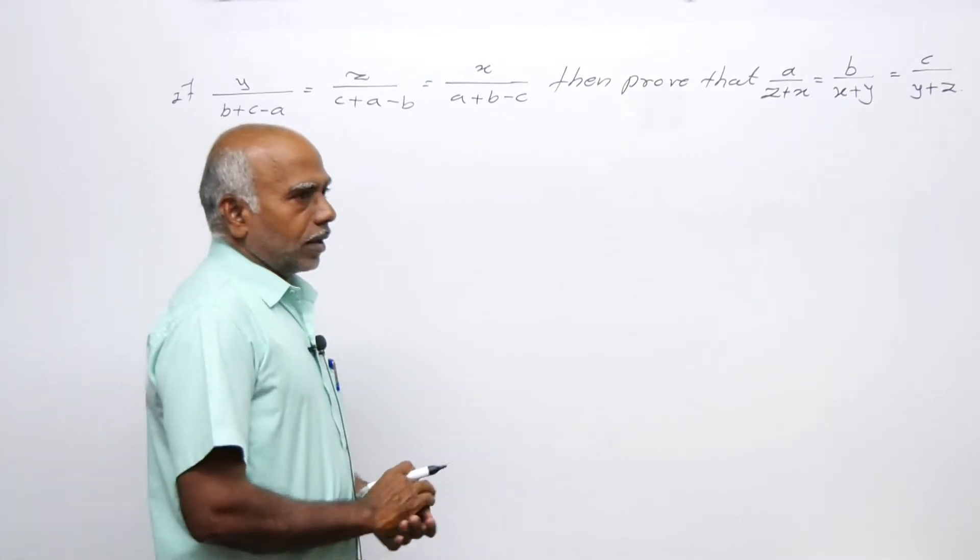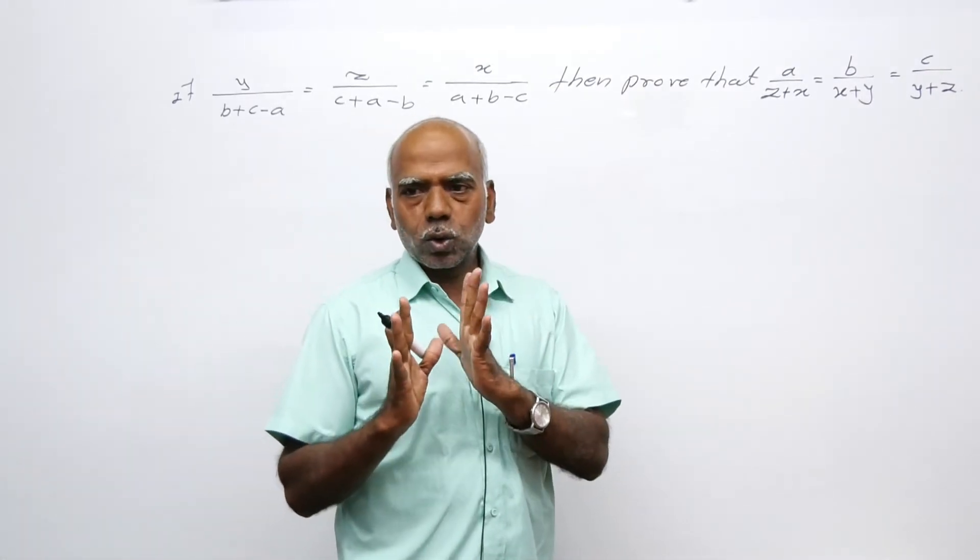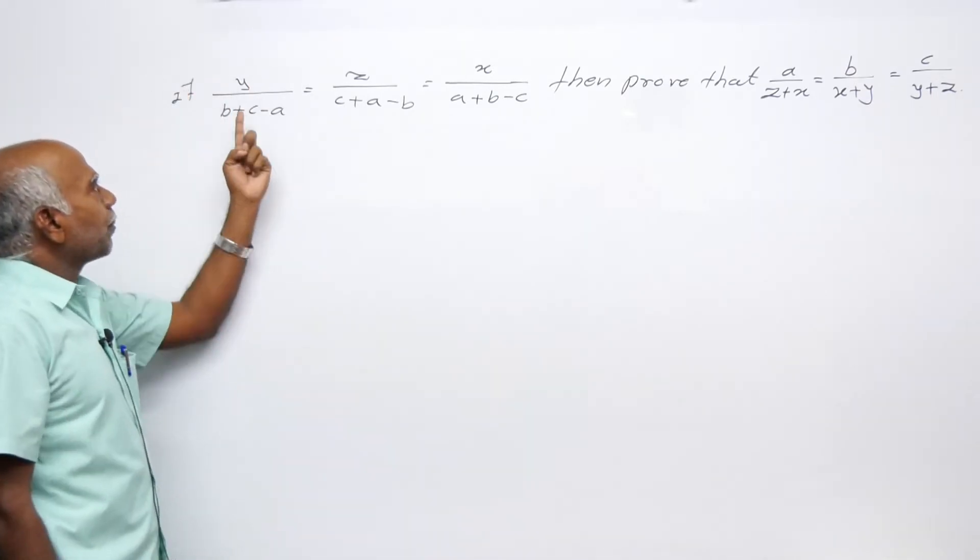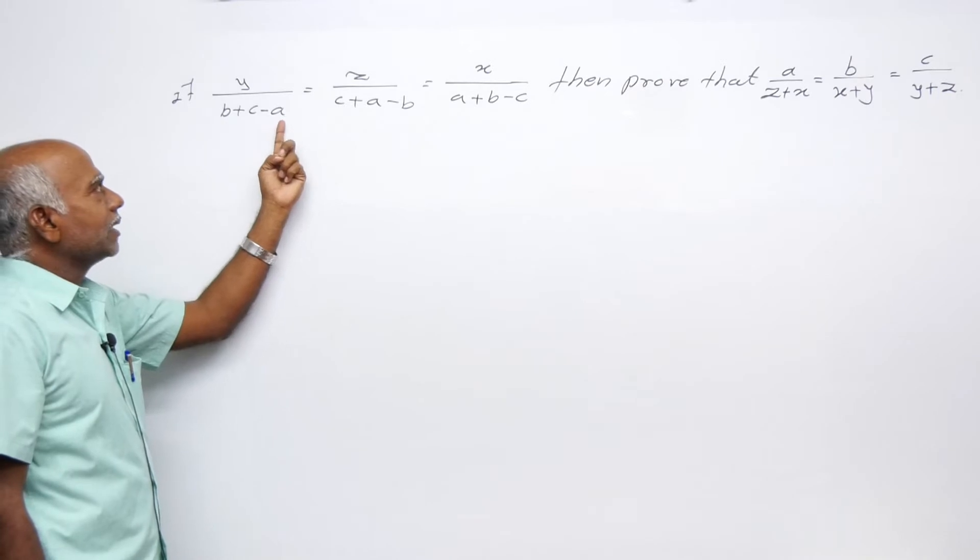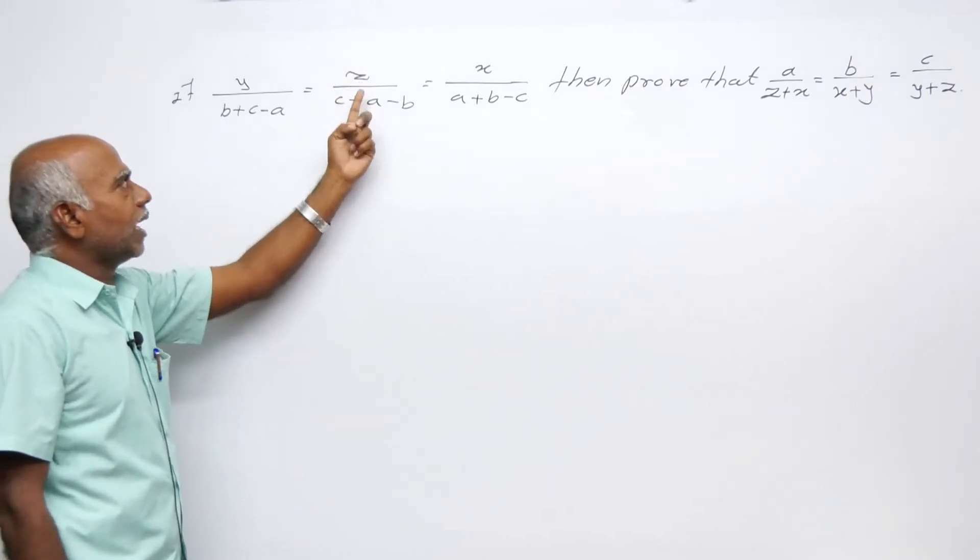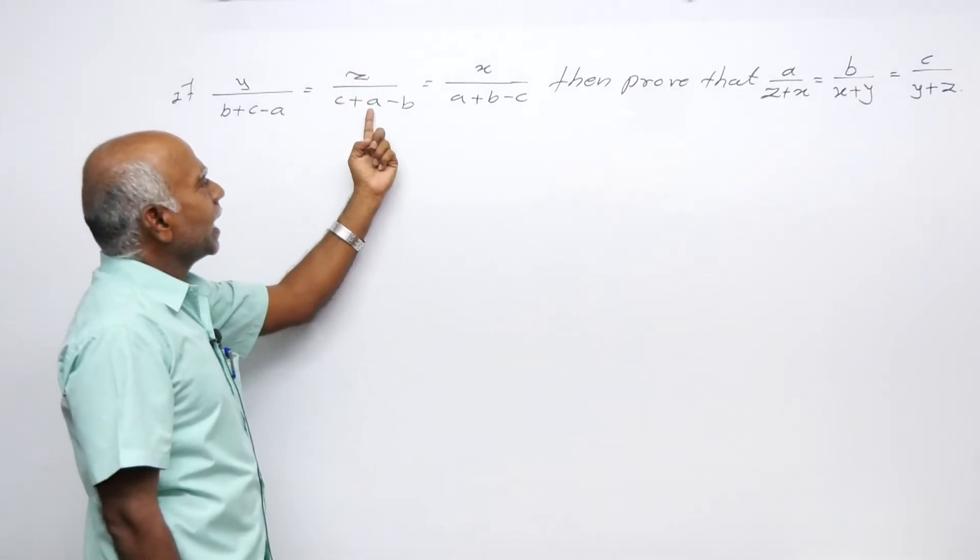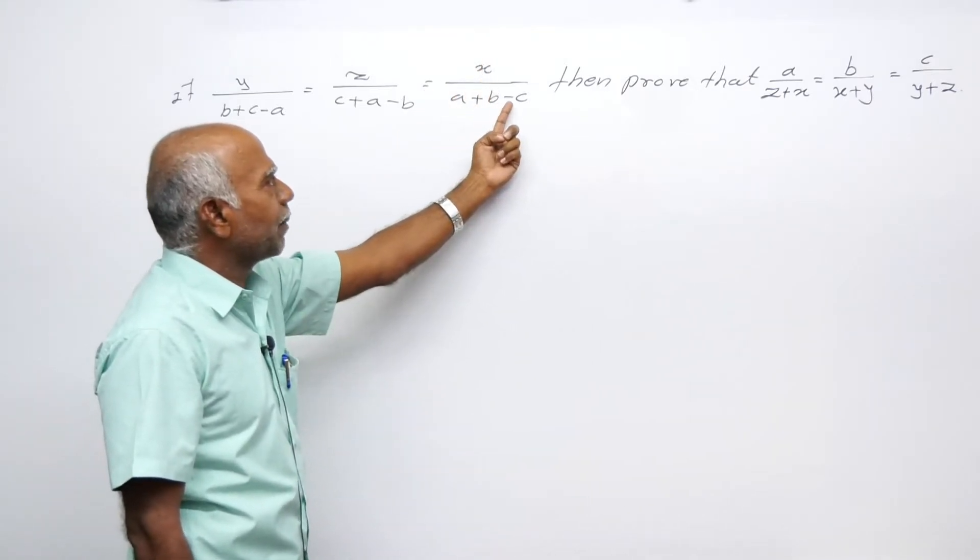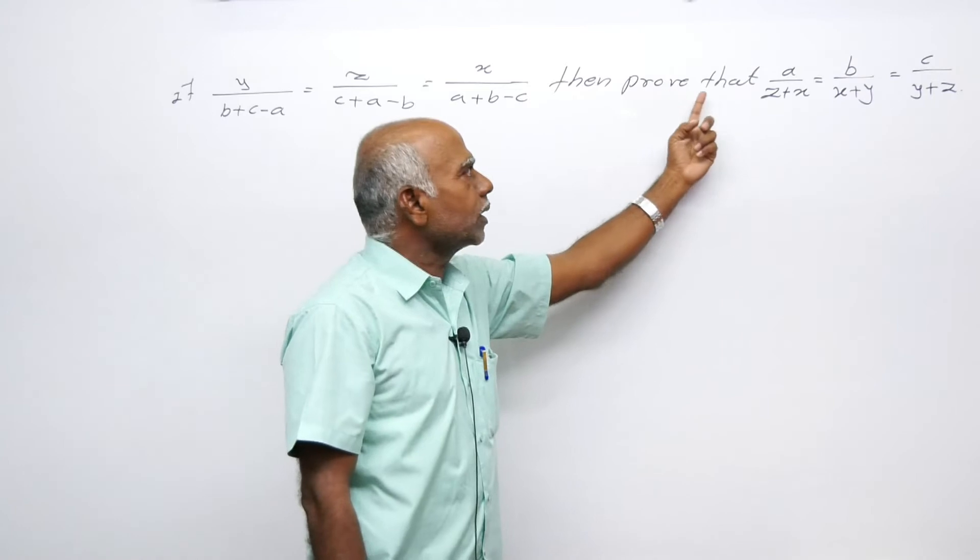Second problem: x upon B plus C minus A is equal to y upon C plus A minus B is equal to z upon C plus A minus B is equal to x upon A plus B minus C. Then prove that a upon x equals b upon y equals c upon z.